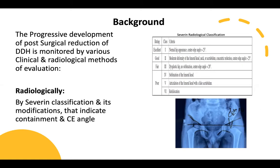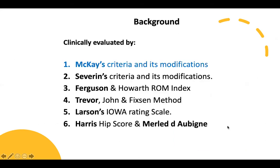The progressive development of post-surgical reduction of DDH is monitored by various clinical and radiological methods of evaluation. Radiologically, severance classification and its modifications are used, which indicate containment and CE angle.